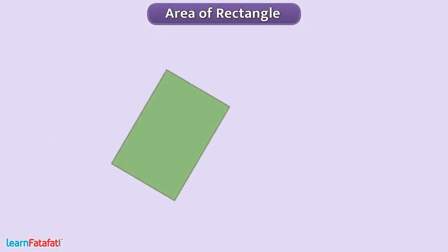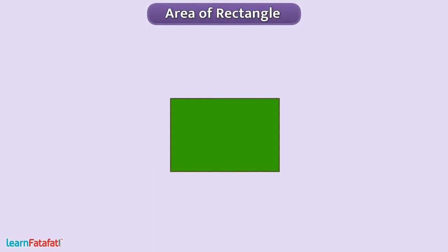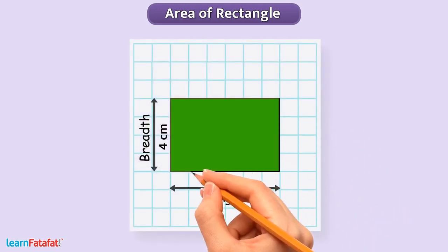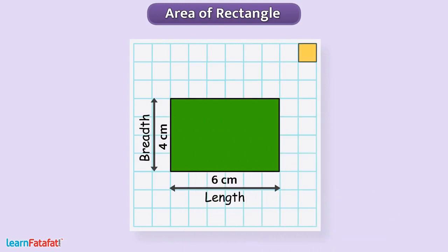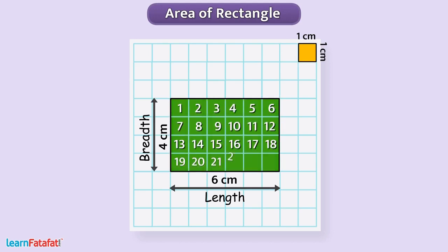Now, let's understand how to find the area of a rectangle. Here is a rectangle of 6 cm length and 4 cm breadth. Let's draw its outline on squared paper with 1 cm multiplied by 1 cm squares. Here, we see all complete squares. They are 24 in number.